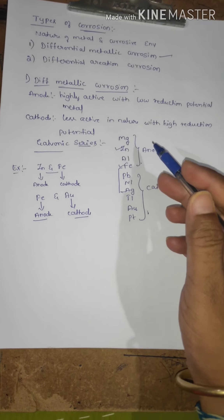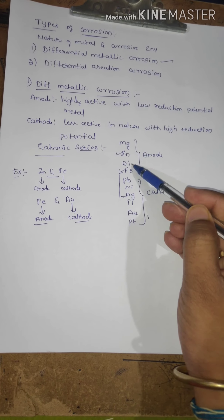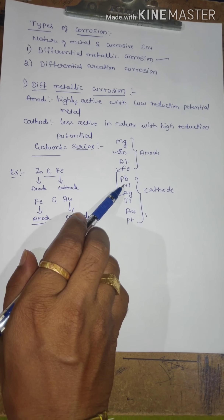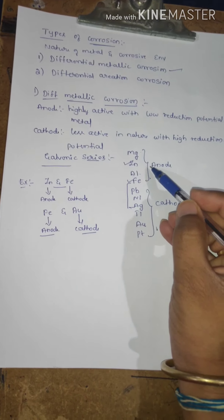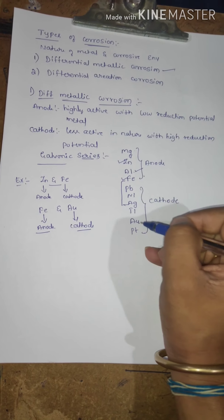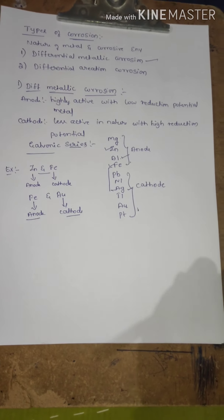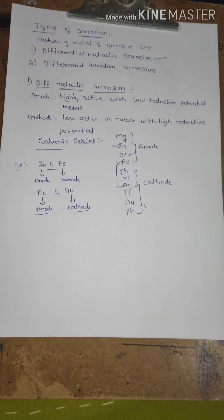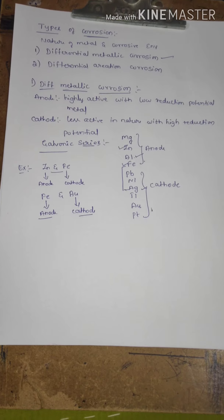You can write any example from the galvanic series — magnesium and aluminium, magnesium and iron, aluminium and nickel, or zinc and nickel. For any two metals, the one with the lower reduction potential is always the anode material, and the one with the higher reduction potential acts as the cathode material. For more information, please subscribe to my channel. Thank you.